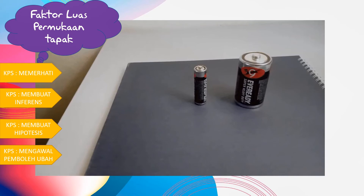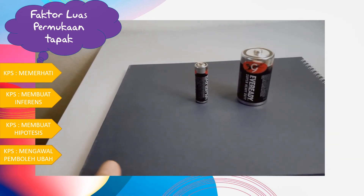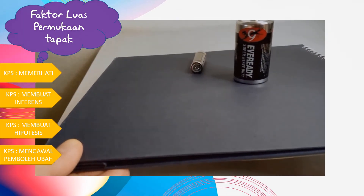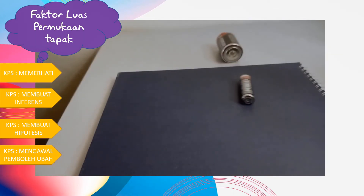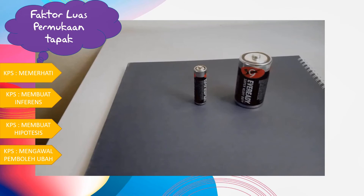Sekarang kita akan uji dan lihat bersama-sama amali yang kedua ini, iaitu faktor luas permukaan tapak. Pemboleh ubah manipulasinya ialah saiz luas tapak pada sel kering — satu besar, satu lagi kecil. Apabila dicondongkan kepingan cardboard, didapati sel kering yang luas tapaknya kecil akan jatuh terlebih dahulu. Hipotesisnya ialah semakin bertambah luas tapak objek, semakin bertambah kestabilan objek.